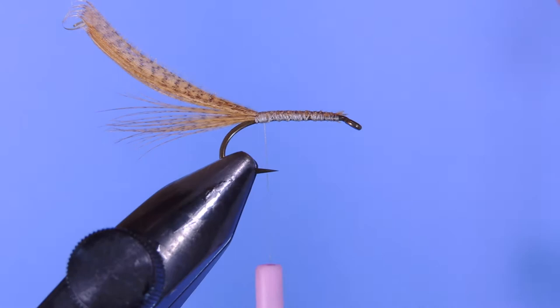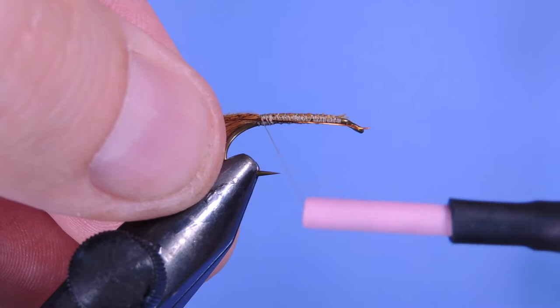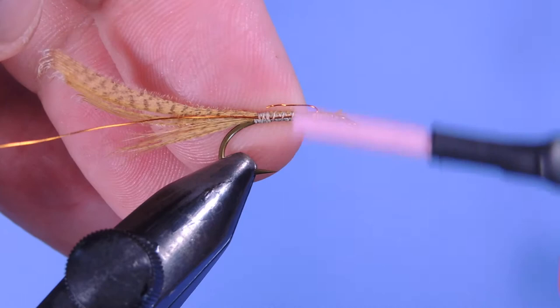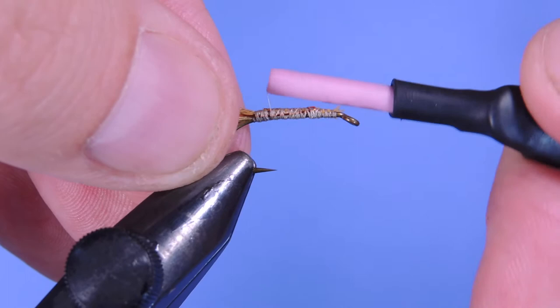Next we're going to tie in a length of copper wire. I always like to just leave a little bit extra and fold that back just for a little bit added durability.